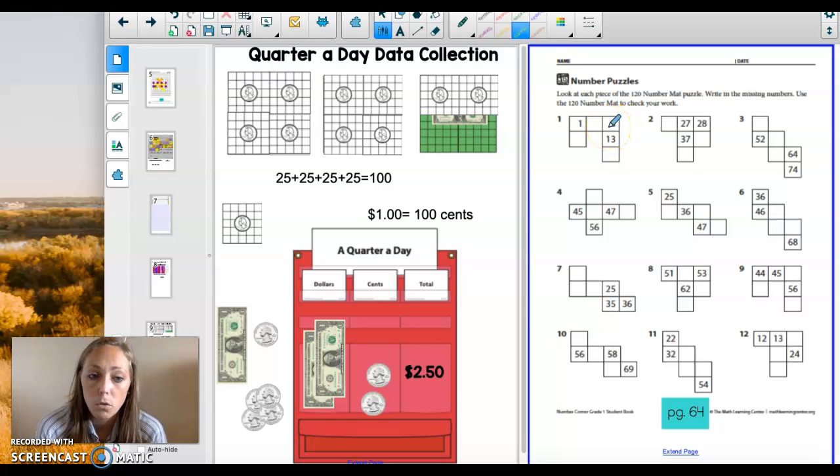We've learned that when you go down on the 120 chart, you're adding 10. When you go up, you're taking away 10. When you go to the right, you're adding one. When you go to the left, you're taking one away. So here we have the one. What comes after one? It's going to go one something, three. I hope you said two. And then the three is here. And look, it goes down and adds 10. And three plus 10 is 13. Now what's 10 more than 13? 23.